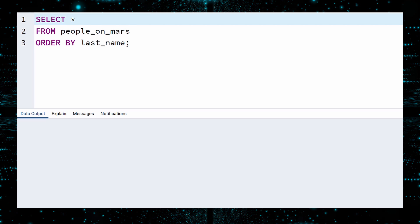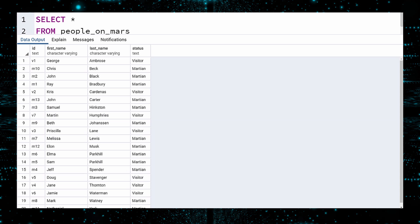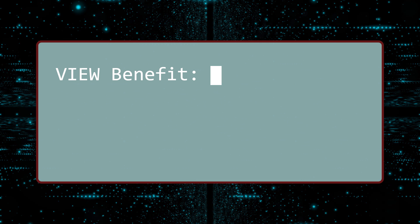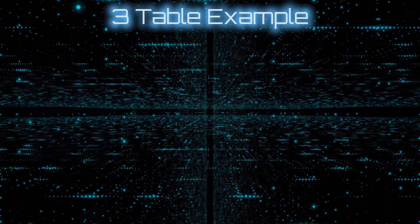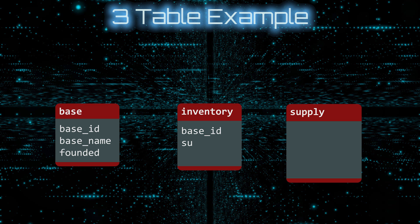Engineers can now easily query the list of people on Mars by using this view. Execute. This is another benefit of views: simplicity. Instead of requiring people to query two tables or know how to use UNION, they can simply write a select using this view. For our next example, we will use three tables in the Martian database: Base, Inventory, and Supply.